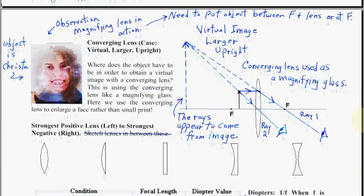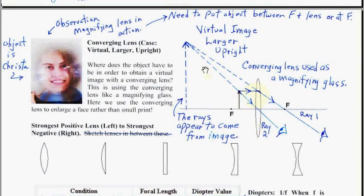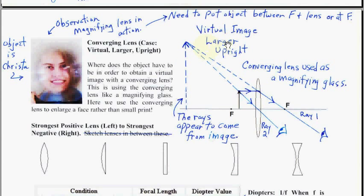The converging lens has another mode when you're very, very close — you have the magnifying glass. If you have a newspaper and a magnifying glass, you see big print. There's my daughter putting the magnifying glass in front of her, and we see her big head. The theory says ray 1 parallel through F, and ray 2 straight through the center. These two rays appear to come from way back, concluding the image is bigger. The image is virtual — we used dotted lines to locate it. It is larger and upright: the converging lens used as a magnifying glass.